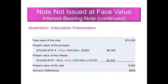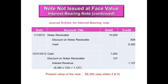My discount, which is the difference between the $10,000 and the $9,392, is $608. That amount is gradually being converted back to your interest revenue. Now let's look at how we record our journal entries.